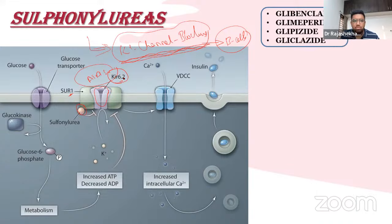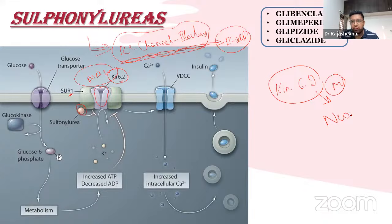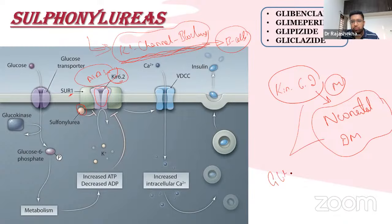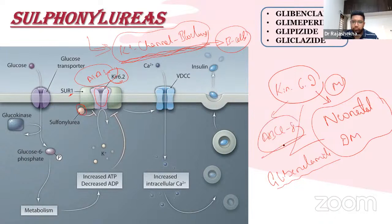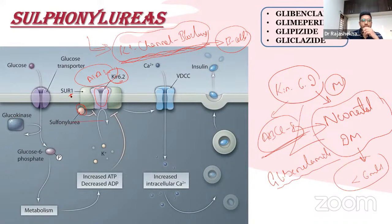The KIR 6.2 gene is the same gene mutated in neonatal diabetes mellitus — diabetes appearing within the first six months of life, a monogenic form. The gene involved is ABCC8, which encodes SUR1. The drug of choice for neonatal diabetes caused by this mutation is glibenclamide.